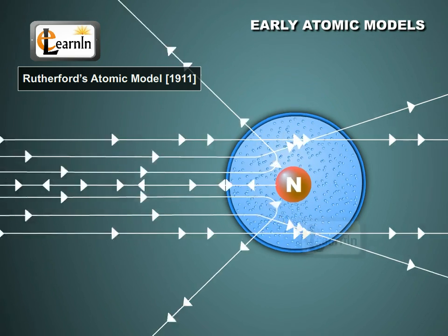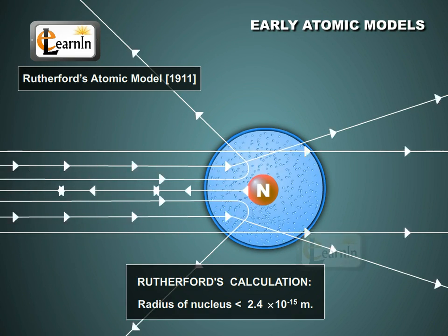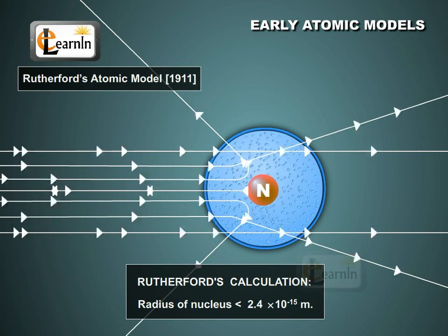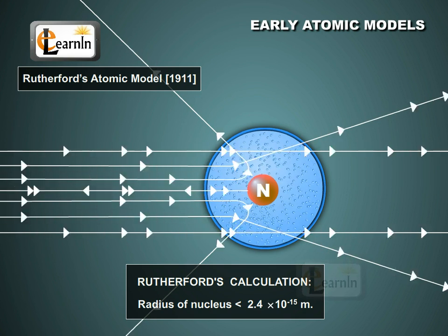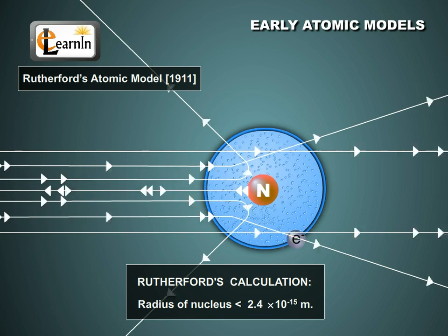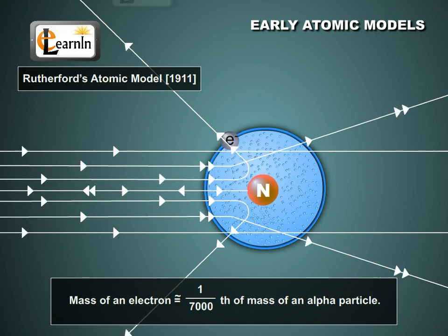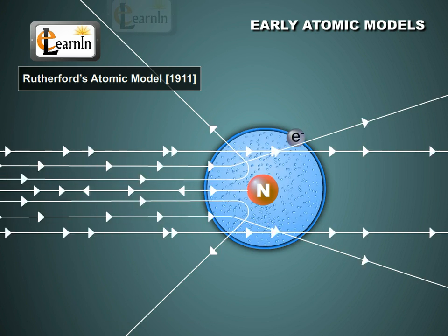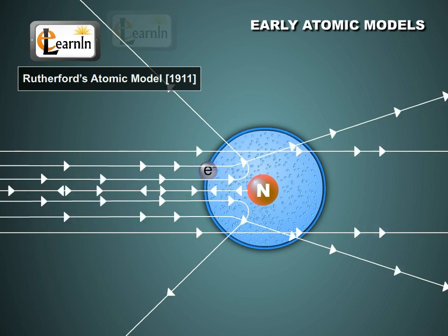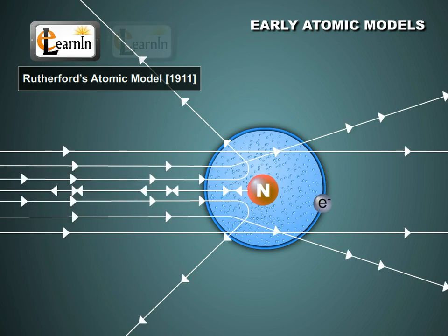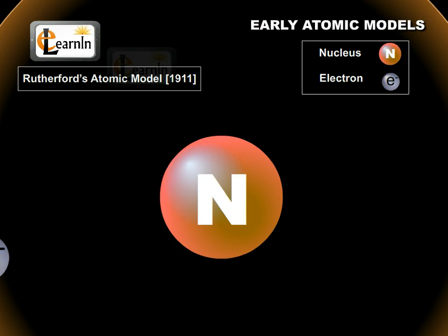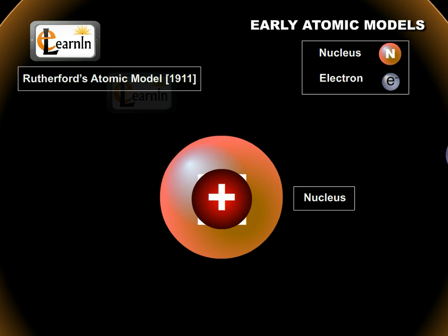From the data obtained in this experiment, Rutherford calculated the radius of the nucleus and found it to be shorter than 2.4 × 10⁻¹⁵ meters, or 2.4 quadrillionth meters. Because the mass of an electron is only about 1/7000th the mass of an alpha particle, the effect of electrons inside the atom on the deflection of the alpha particles can be safely ignored. From his experiments, Rutherford proposed an atomic model consisting of a central, massive, positively charged nucleus made up of particles called protons.